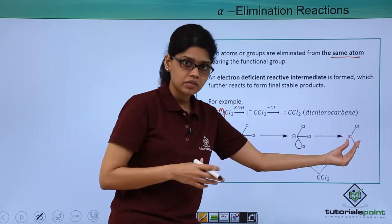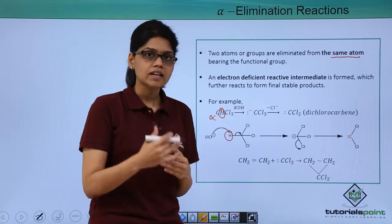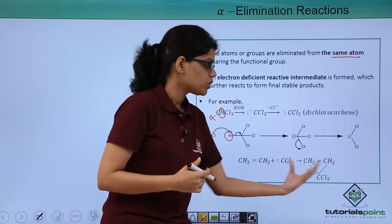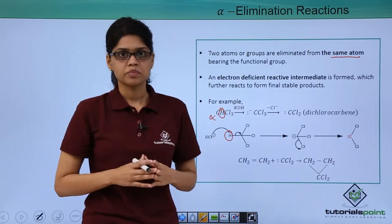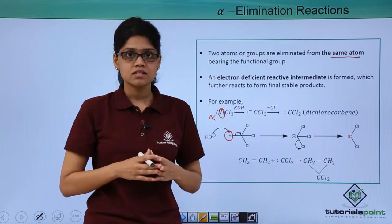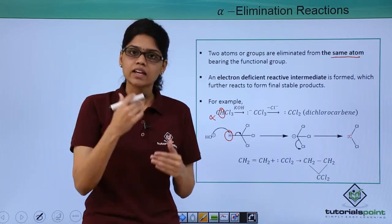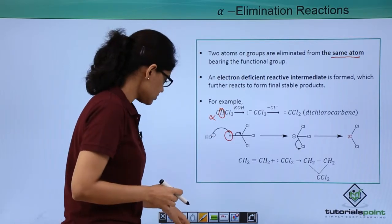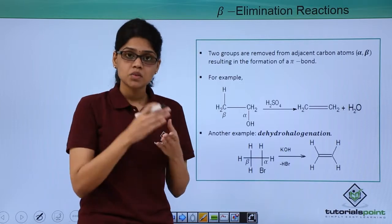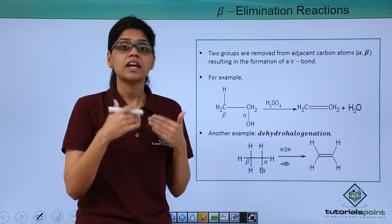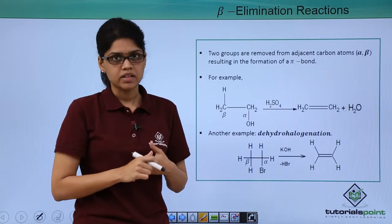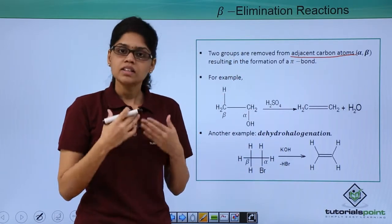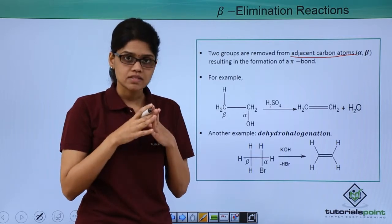This highly reactive intermediate reacts with other molecules — in this case ethene — to give a final product. Now let us go to the second type of elimination reactions, called beta elimination reactions. Here, the 2 atoms or groups getting eliminated are from the alpha and beta carbon atoms, that is from adjacent carbon atoms, resulting in the formation of a product which has unsaturation or contains multiple bonds.